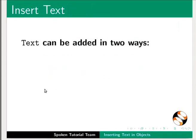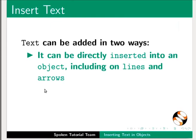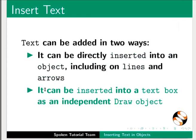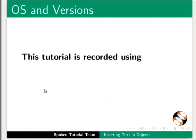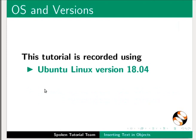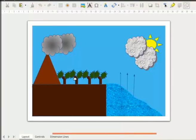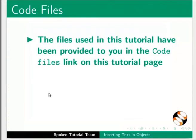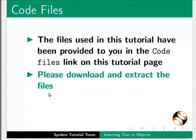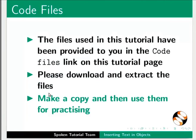Text can be added in two ways: it can be directly inserted into an object including on lines and arrows, or it can be inserted into a text box as an independent draw object. This tutorial is recorded using Ubuntu Linux OS version 18.04 and LibreOffice Suite version 6.3.5. The files used in this tutorial have been provided in the code files link on this tutorial page. Please download and extract the files, make a copy, and then use them for practicing.